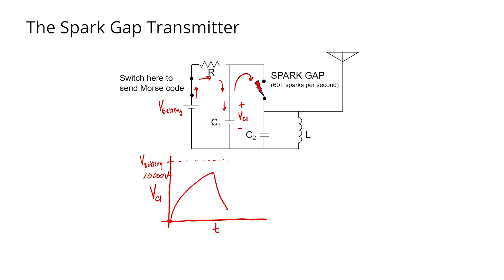then the air in the spark gap will no longer be able to sustain the spark, and then capacitor C1 will start to charge up again, and the cycle will repeat.